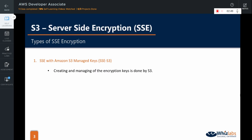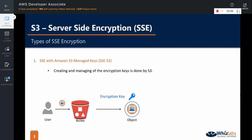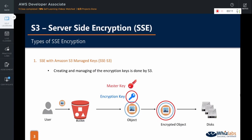When a user uploads an object, S3 encrypts the data with a unique key, which is the encryption key, and as an additional security measure, it encrypts the key itself with another key called a master key. S3 then keeps rotating the master key for further security. The encrypted object is then stored on the disks.